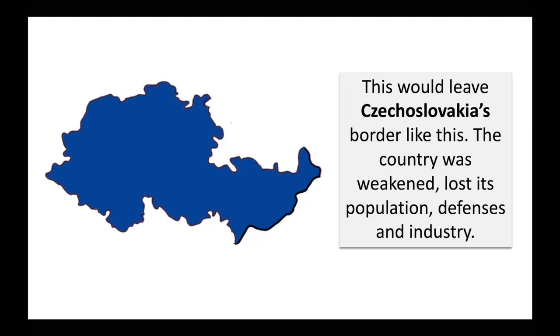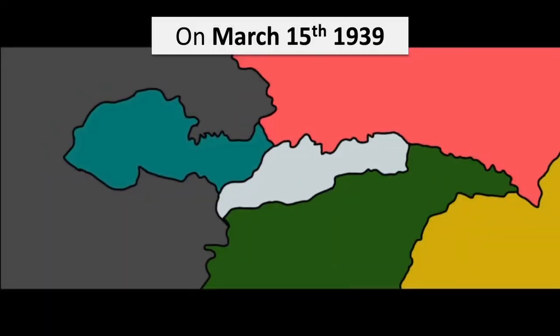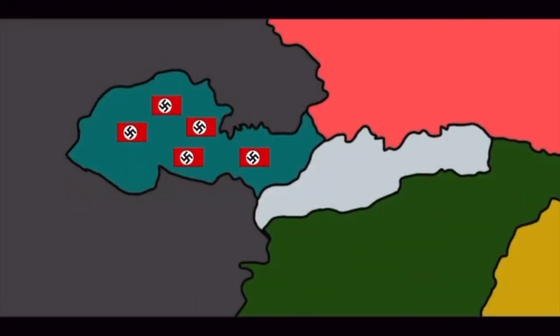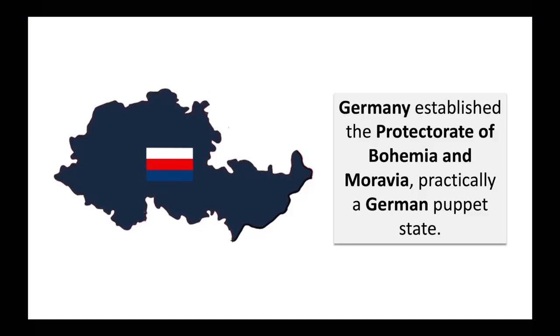The country was weakened, lost its population, defenses, and industry. On March 15, 1939, German troops invaded the rest of Czechoslovakia and established the Protectorate of Bohemia and Moravia, which was practically a German puppet state.